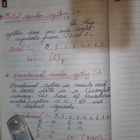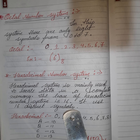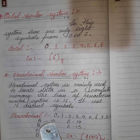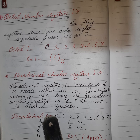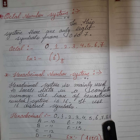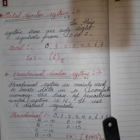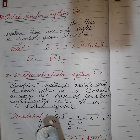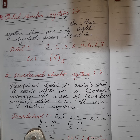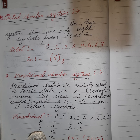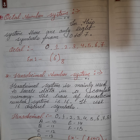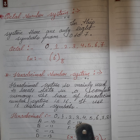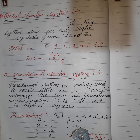It uses 16 distinct symbols: the digits 0 to 9 represent the values 0 to 9, and the letters A to F represent the values 10 to 15. So: A is 10, B is 11, C is 12, D is 13, E is 14, and F is 15.